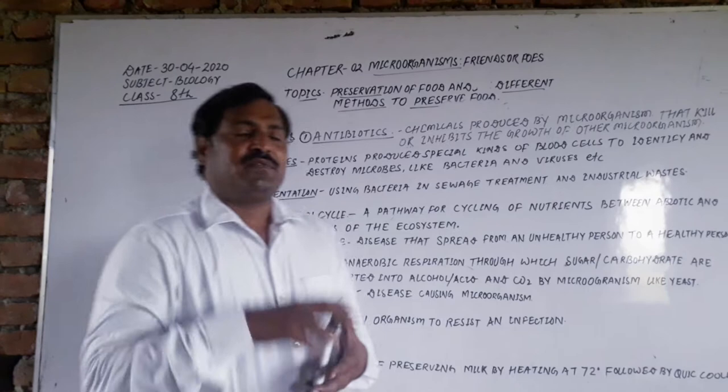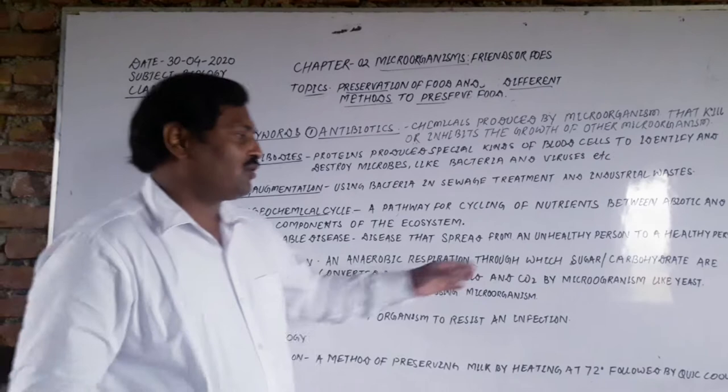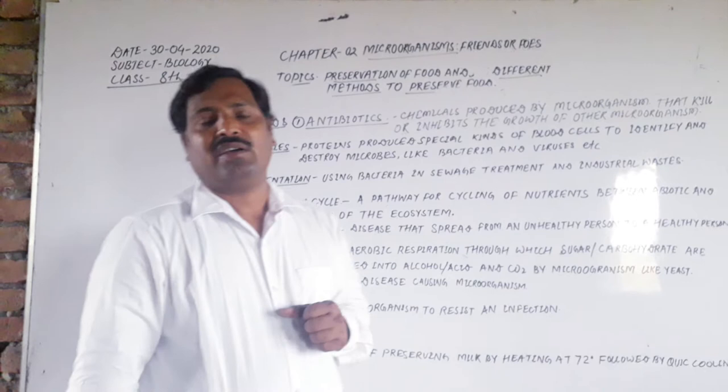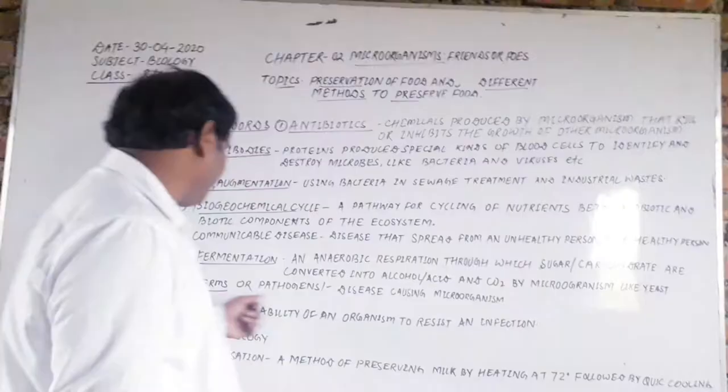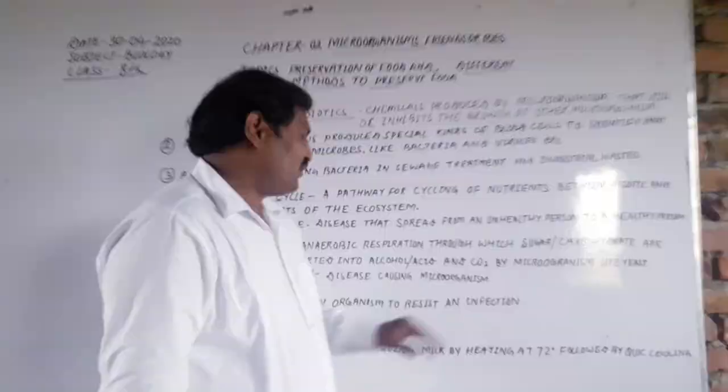The sixth keyword is fermentation. Fermentation is a process — a form of respiration — through which starch and carbohydrates are converted into alcohol, acid, and carbon dioxide by microorganisms. Pathogens, or germs, are disease-causing microorganisms.